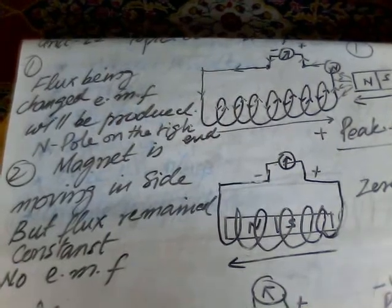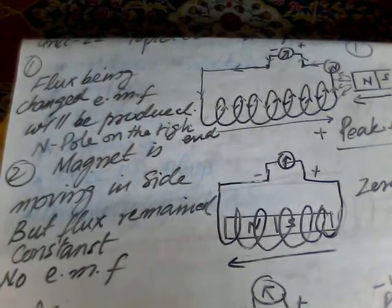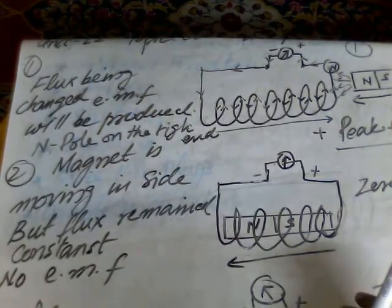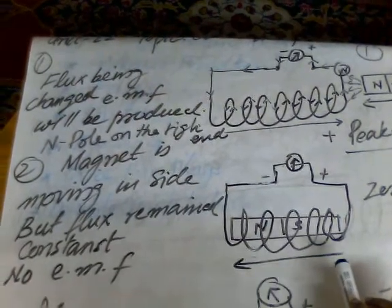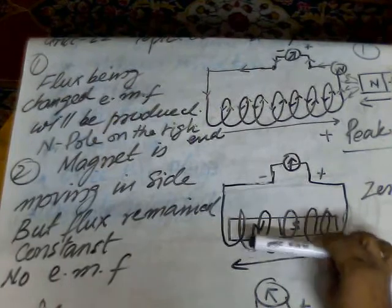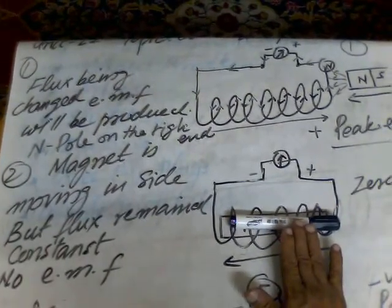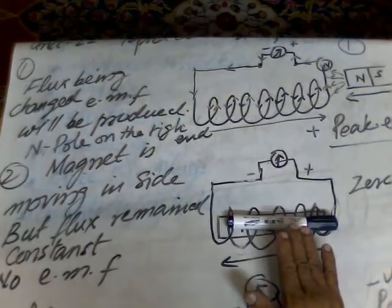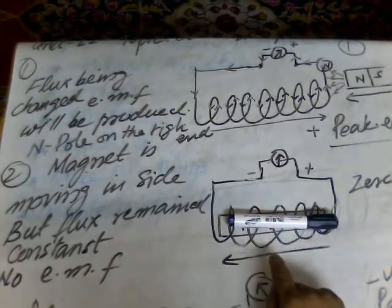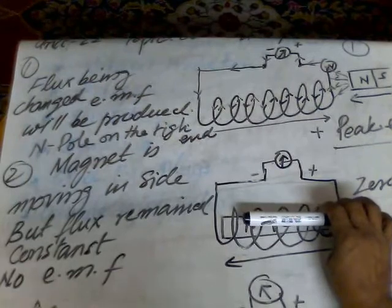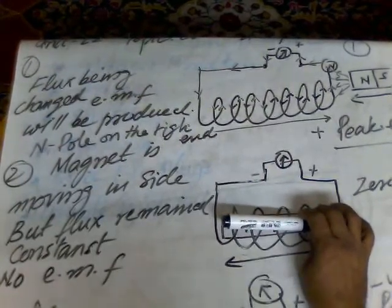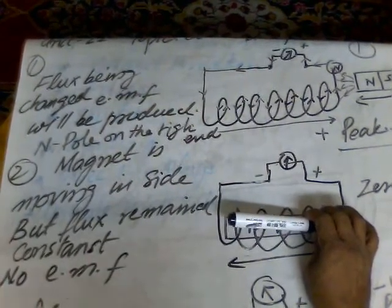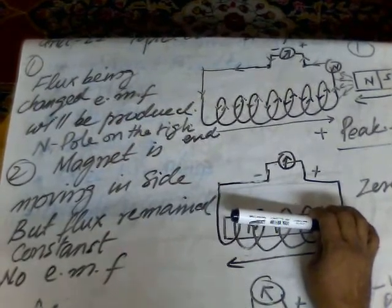Even if the magnet is away from the coil and no magnetic lines of force pass through the solenoid, the EMF will still be zero. Or if the magnet comes inside the coil and remains constant with no motion, there will be no change in electromagnetic flux and no EMF. If the magnet is inside the coil and moving but the flux is not changing — flux is there but it is constant — there will be no EMF.